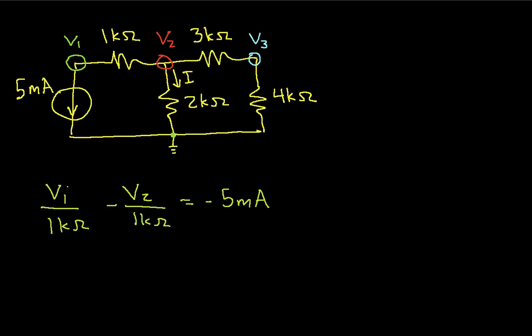So the way we do this is we look at the node. We see that there's a 1k ohm resistor connected to it. So that gives us the v1 over 1k ohm. Then we look at the other voltages, which are connected through resistors to the node. And we see that v2 is connected through the 1k ohm resistor. And so that ends up giving us the minus v2 over 1k ohm.